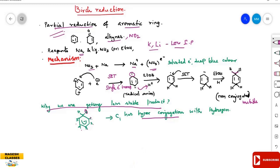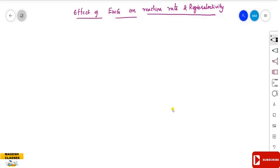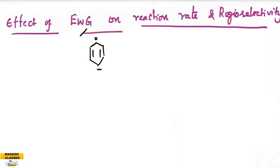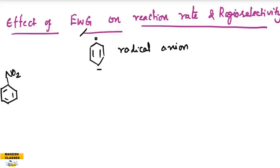What is the role of an electron-withdrawing group on reaction rate and regiochemical selectivity in Birch reduction? The intermediate formed is a radical anion via single electron transfer. When an electron-withdrawing group is present on the benzene nucleus, it decreases the electron density on the ring, so the rate of the reaction decreases.